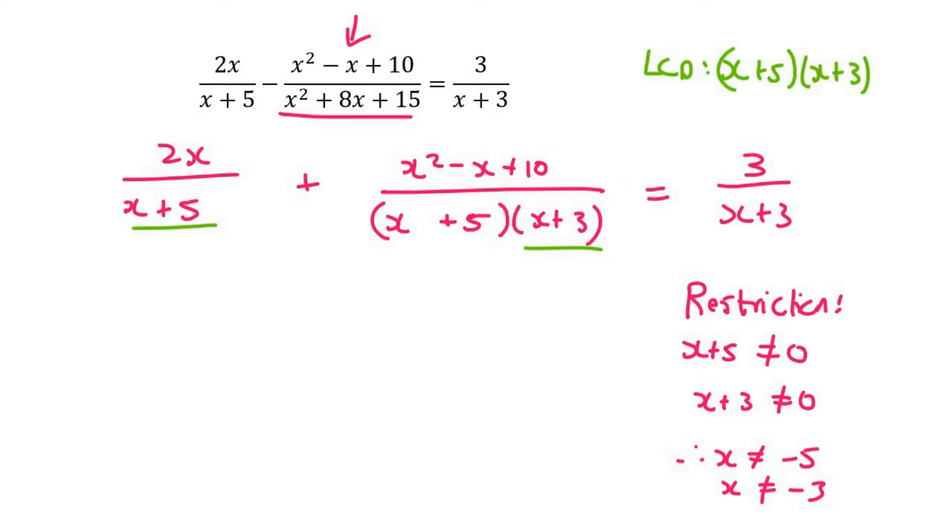So what we should realize now is that this one needs to be multiplied by x plus 3 because it already has the x plus 5. This one doesn't need anything and then this one still needs x plus 5. So let's do that in the next step.